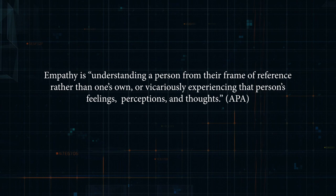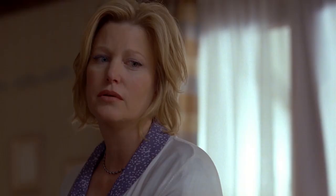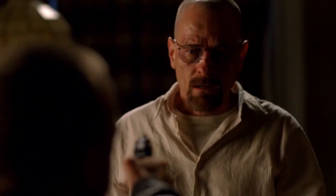Empathy is understanding a person from their frame of reference rather than one's own, or vicariously experiencing that person's feelings, perceptions, and thoughts. A person with a dysfunctional sense of empathy is unconcerned or unaware of the effects of their actions, unable to understand another person's perspective, or excessively self-referential, and hyper-attuned to others' emotions only as they relate to themselves. Walt understood other people's feelings and perspectives, but could only do so to the extent that they involved him. Walt's conversation with Jesse regarding the poisoning of Brock exemplifies his impairment — he understood how Jesse would feel if he thought Gus poisoned him, and used that to survive his feud with Gus.